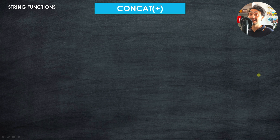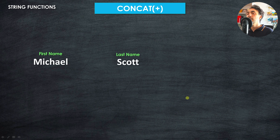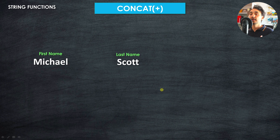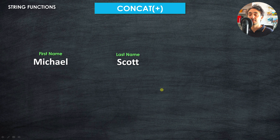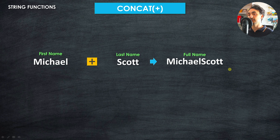Now we're going to talk about concatenations in Tableau. It's very simple - we use the plus operator to combine multiple texts into one. For example, in our database we could have the first name and the last name separated in different fields, and we'd like to have only one field called the full name. We can use the plus operator to combine the first name 'Michael' with the last name 'Scott' to get the full name 'Michael Scott'.